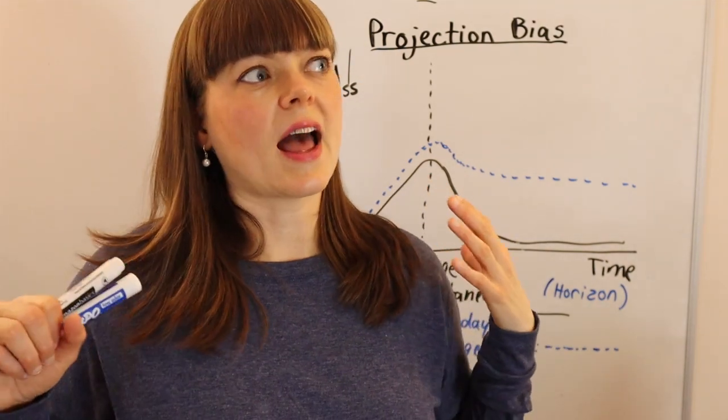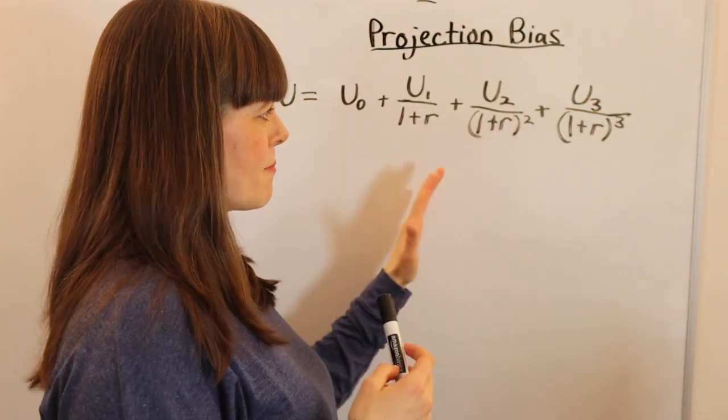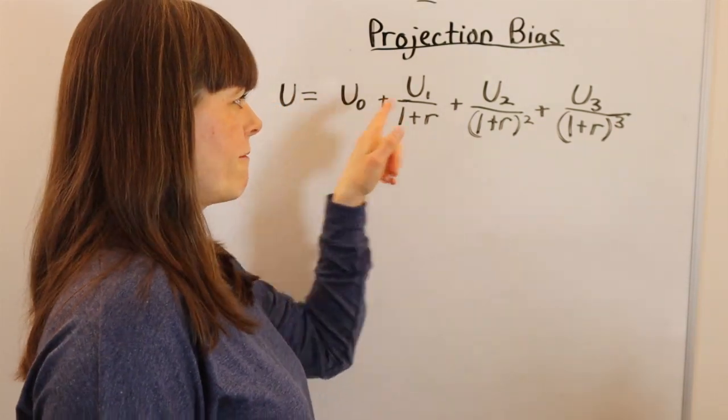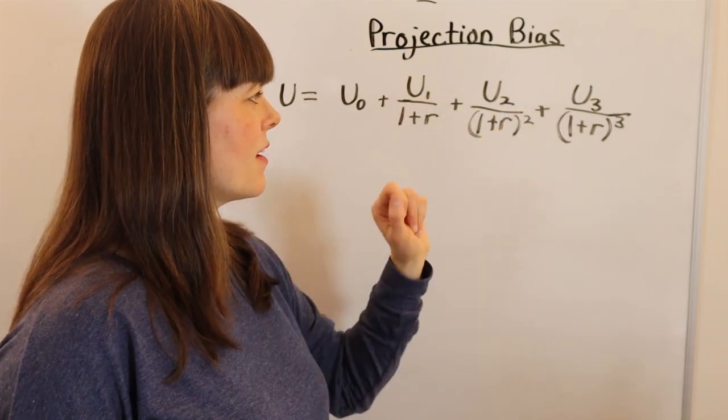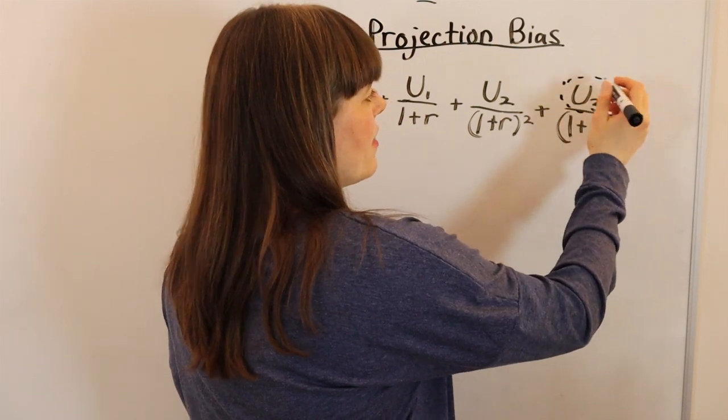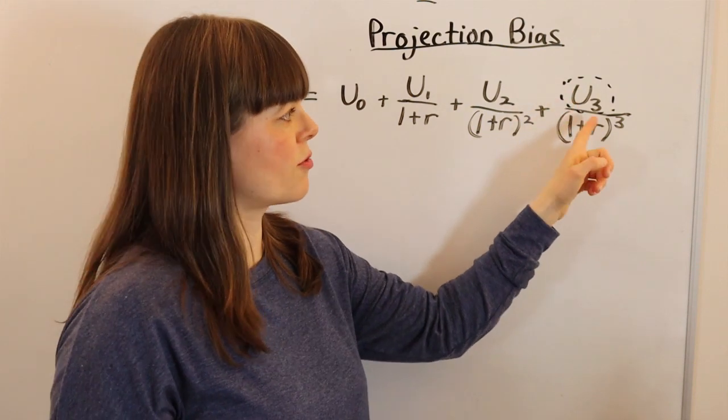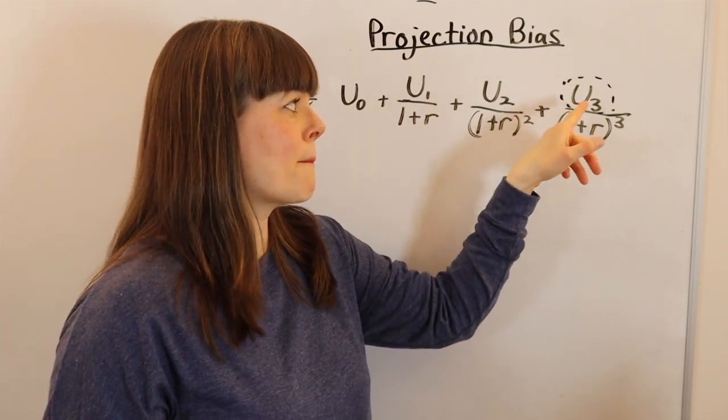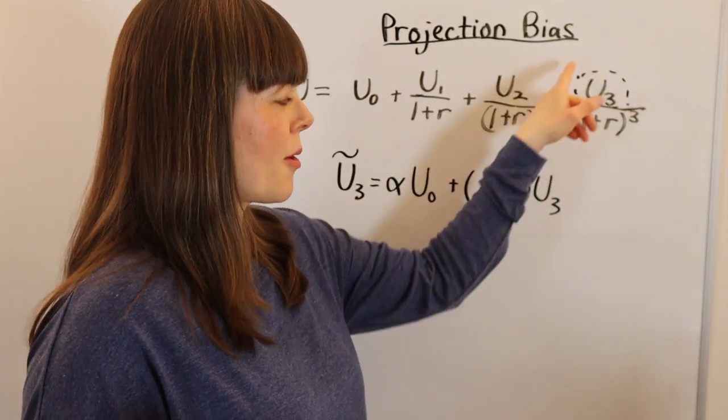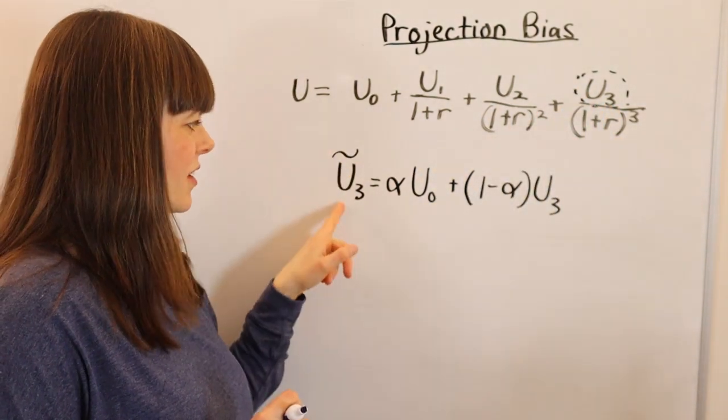The next question is, how does this appear in a model? This is a time model. We'll start with a classic discounting time model with four periods: 0, 1, 2, and 3. Projection bias is about mispredicting future utilities. This is instantaneous utility - what you experience in the moment in period 3. Projection bias says you'll mispredict your utility in that period. Here's one way to model this: we'll come up with a projected utility in period 3.